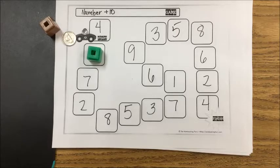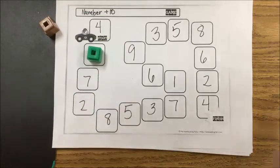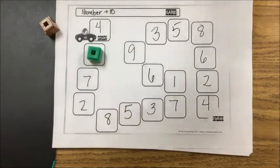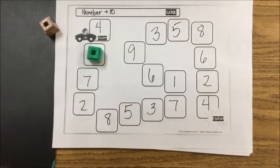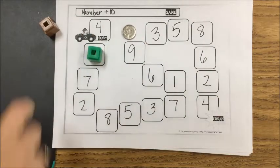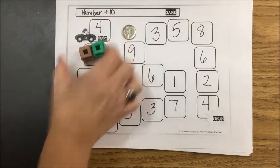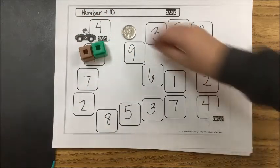My turn. I'll reroll, so to speak, or reflip. Oh yay, I got... oh, and I know the answer to that one. One, two, and it's a nine. And nine plus ten is 19. We're partners and buddies.